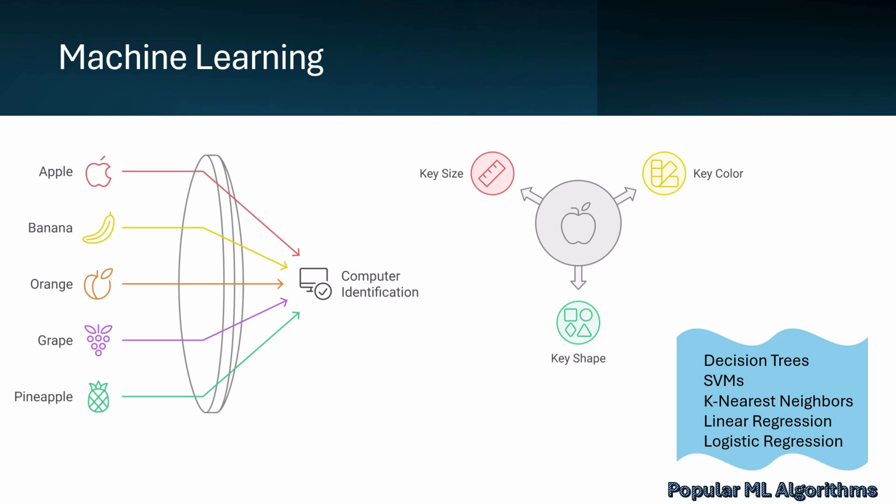Finally, linear regression and logistic regression help model relationships between variables, with linear regression predicting continuous values like fruit weight and logistic regression addressing classification tasks like fruit type.